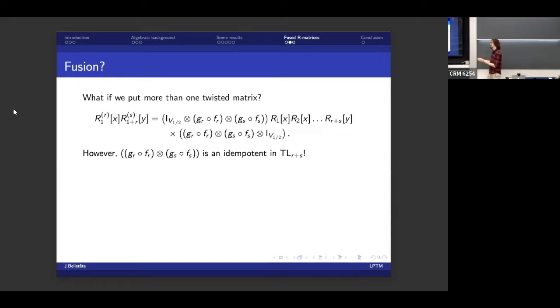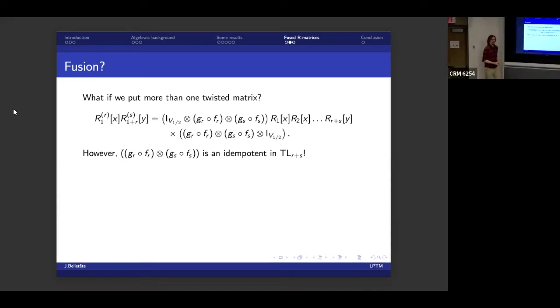And now the obvious question is, can we identify some fusion in this? So in other words, what happens if I put more than one twisted matrix next to each other? So I take one fused R matrix of spin r next to another one of spin s. And I'm asking, what is this? So if I just apply the definition directly, I get this thing. So I have tensor product of idempotents, a long string of R matrices. Now they don't have the same spectral parameter. So somewhere in my string of R matrices, I also have two spectral parameters mixed in. And then I project again.